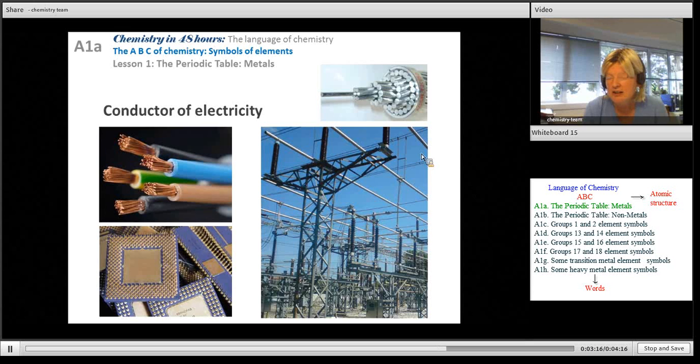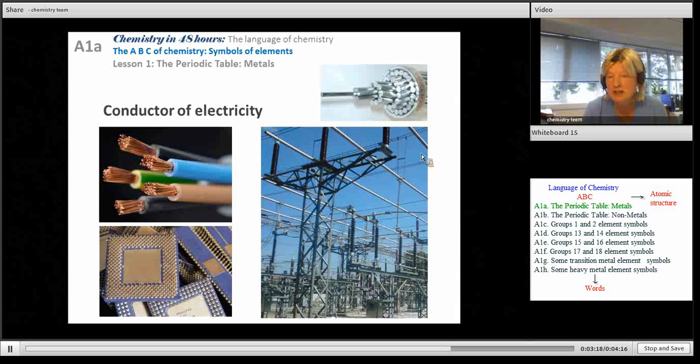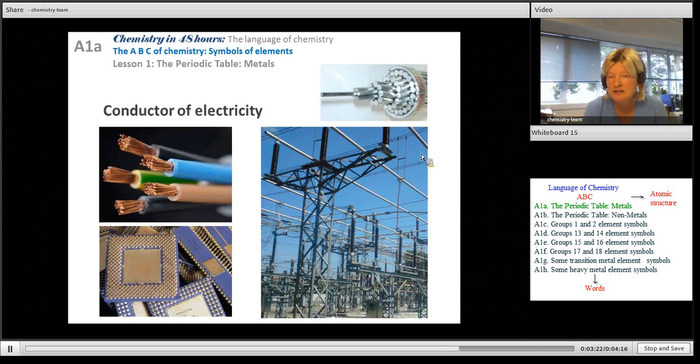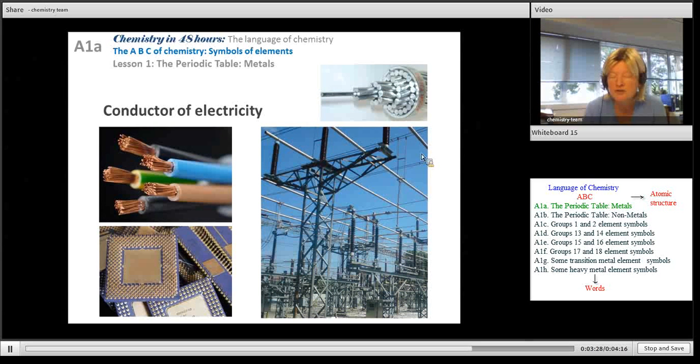In the electricity substations they use aluminium a lot because it's also a fairly good conductor and aluminium is also light, so the top photo shows aluminium wires used in the overhead wires.